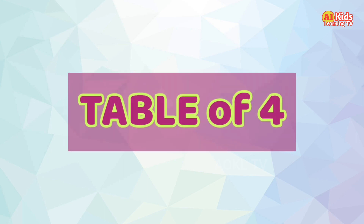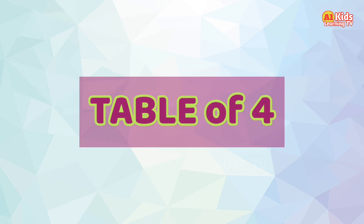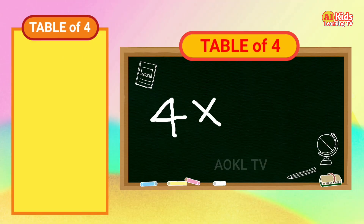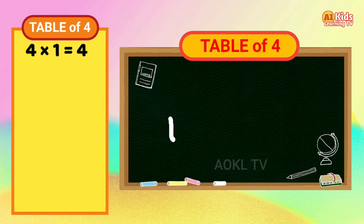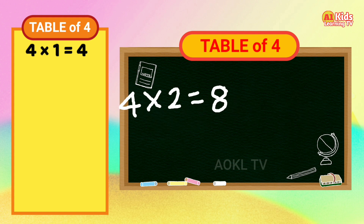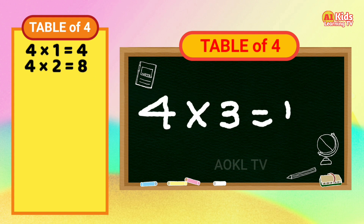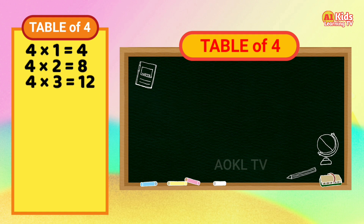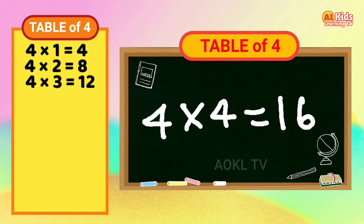Table of four. Four one's are four. Four two's are eight. Four three's are twelve. Four four's are sixteen.